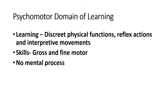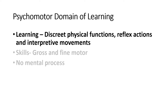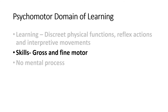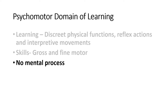The Psychomotor Domain of Learning: learning in this domain focuses on discrete physical functions, reflex actions, and interpretive movements and how they are managed and coordinated to achieve a specific task. The development of gross and fine motor skills are the realm of this domain. Though there is mental processing in the initial learning of a motor skill, there is not much mental thought required once automation of the skill is being achieved.